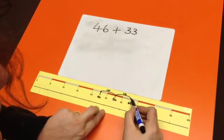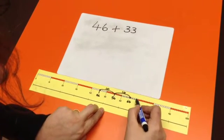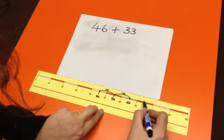Carrying on from that, we count another ten places. One, two, three, four, five, six, seven, eight, nine, ten. That number becomes 76.